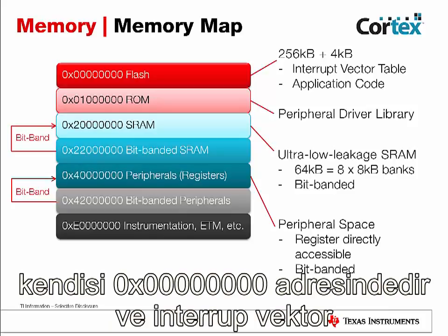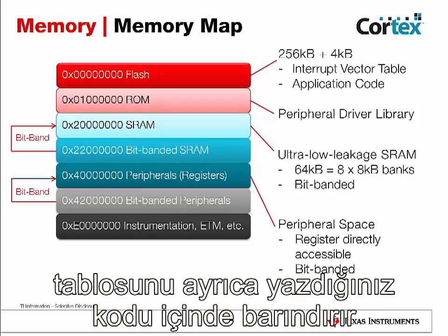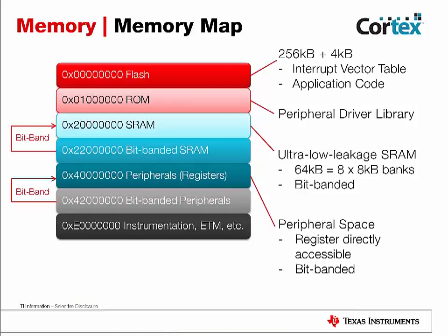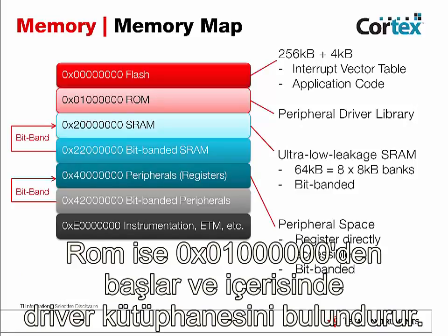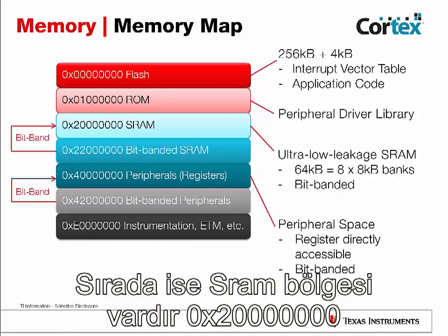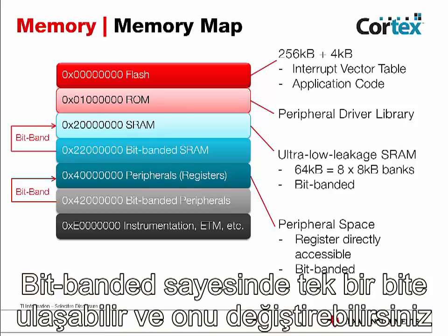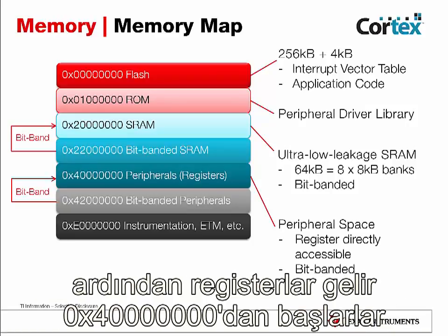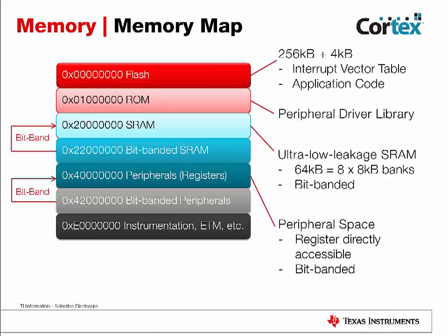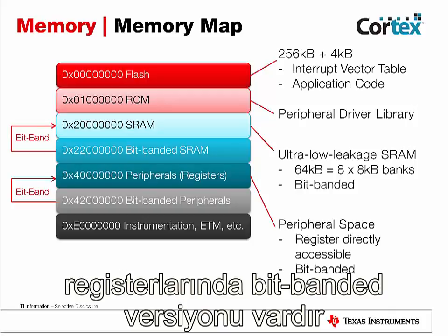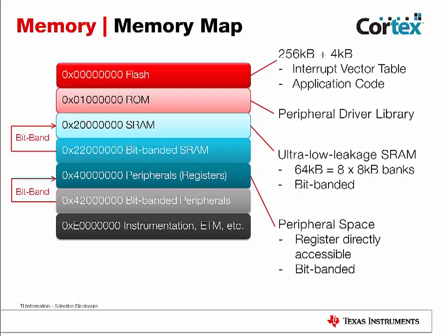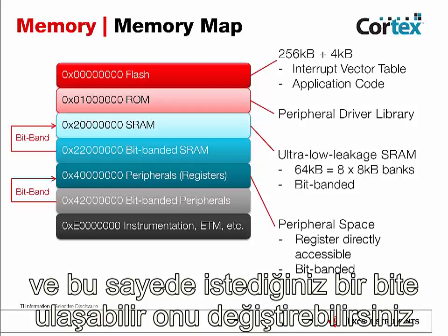The flash region starting at 0x00 is where your interrupt vector table as well as your main application code reside. The ROM memory is located at 0x01 million, where the MSP432 peripheral driver library is located. Next, the SRAM region is bit-banded into the bit-band region of SRAM. The SRAM memory is located at 0x20 million and is also bit-banded, allowing individual bit access. The peripheral registers are located at 0x40 million and are also bit-banded, allowing you to individually control each bit of each peripheral register.